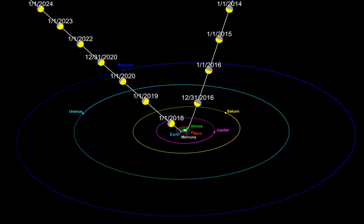There is no reason to believe comets formed in other star systems would not be similarly scattered. If interstellar comets exist, they must occasionally pass through the inner solar system. They would approach the solar system with random velocities, mostly from the direction of the constellation Hercules because the solar system is moving in that direction, called the solar apex. Until the discovery of 'Oumuamua, the fact that no comet with a speed greater than the Sun's escape velocity had been observed was used to place upper limits on their density in interstellar space.